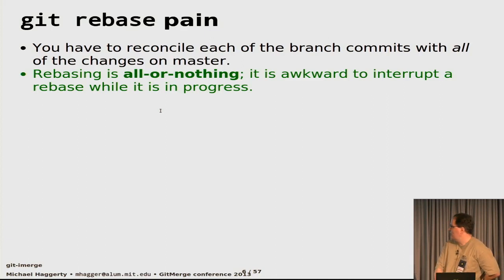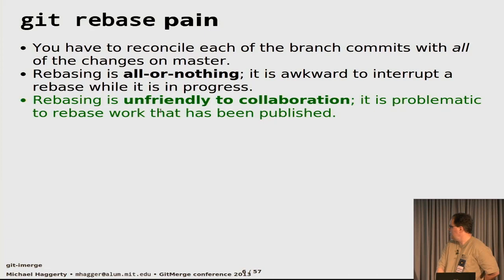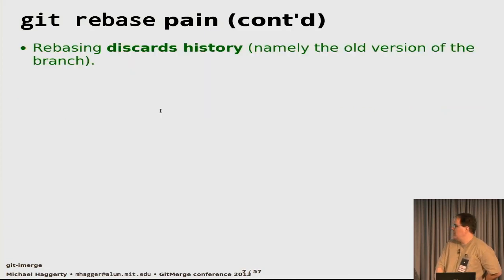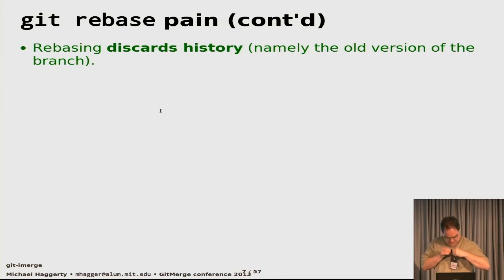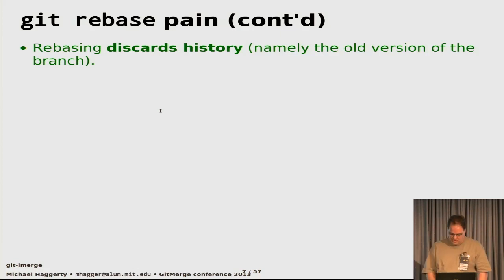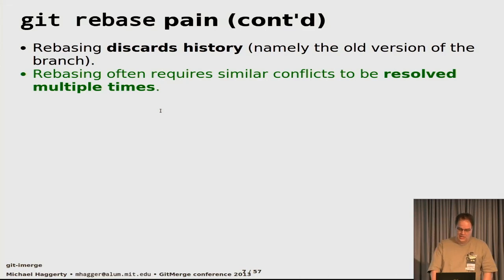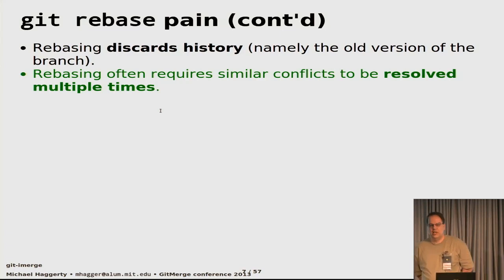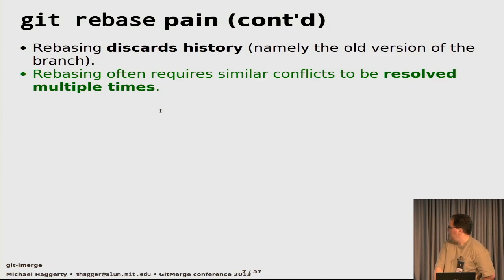It's hard to store a rebase in progress and hard to share the work with somebody else. You can't collaborate on a merge. And once you're done, rebasing discards history. What you're left with is a repository that doesn't include all of the things that have happened to it. The main consequence is that it's not recommended to rebase work that's already been published — because if somebody else has based their work on your original branch, they're going to be screwed when they try to rebase or merge. So rebasing is hostile to collaboration.